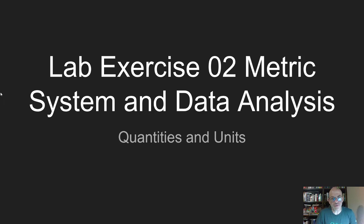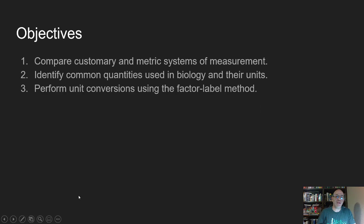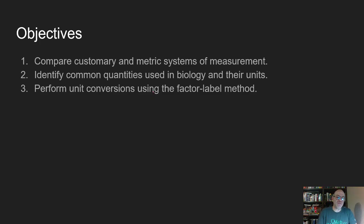In this tutorial video on Lab Exercise 2, the Metric System and Data Analysis, we're going to look at quantities and units for those quantities. The objectives for the lab are to compare the customary and metric system of measurement, identify common quantities used in biology as well as their units, and then to perform unit conversions using what's called the factor label method.